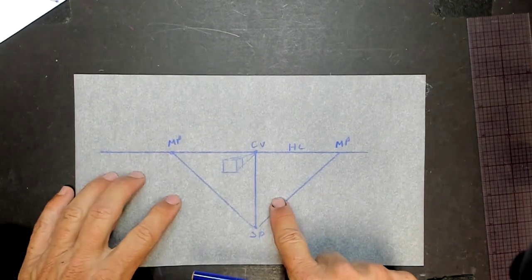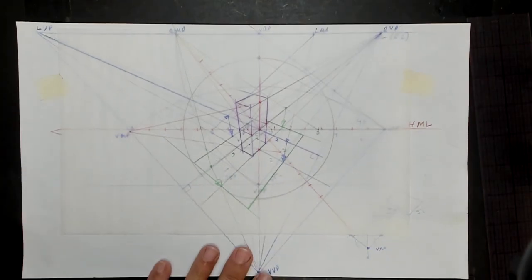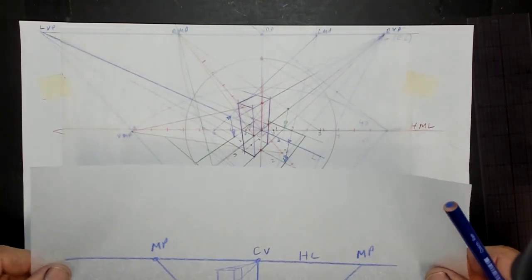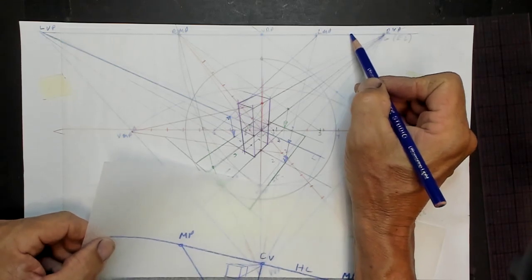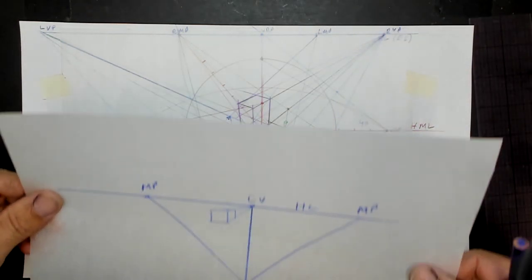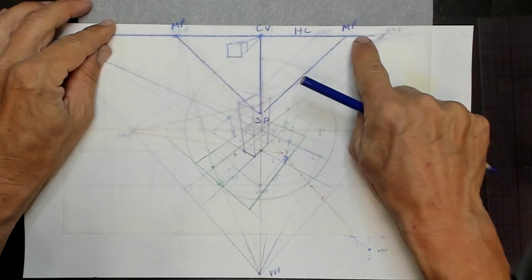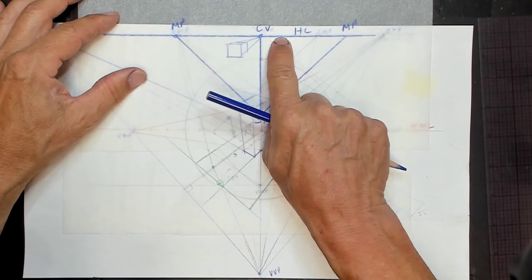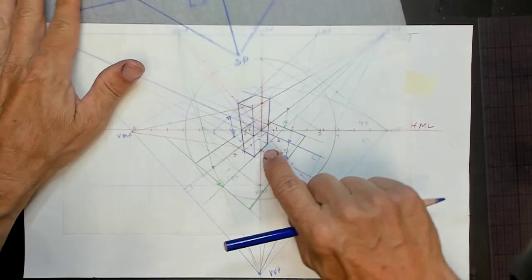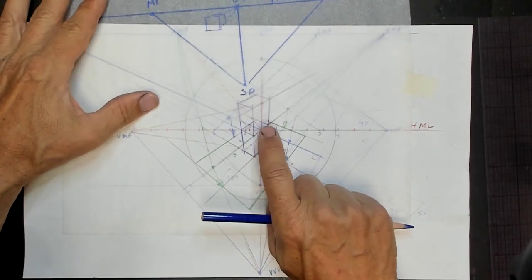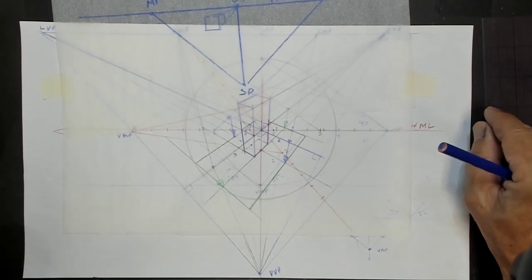So we want to take this diagram and put it on top of this diagram. Here is our horizon line. Here's our horizon line in the three-point diagram — it's up here. But you can't take this horizon line and put it on top of this horizon line, because that means you have a center of vision here, and in this diagram we have a center of vision here. You can't have two centers of vision.